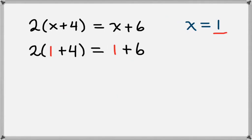On the left-hand side, we need to add the two numbers in the parentheses first. So that's going to give us 2 times 5. And on the right, we'll just add 1 and 6 to get 7.